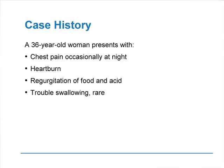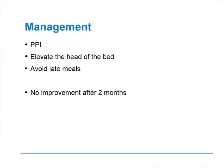There's a case history to start us off. This is a 36-year-old woman who presents with chest pain occurring occasionally at night, heartburn, regurgitation of food and acid, and a rare trouble swallowing. She is managed with PPI, told to elevate the head of the bed, and given recommendations we discussed for management of GERD — told to avoid late meals.